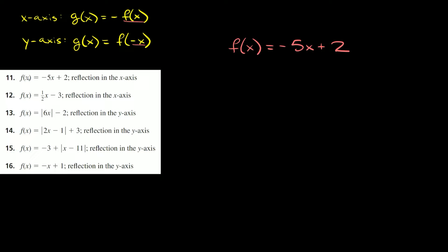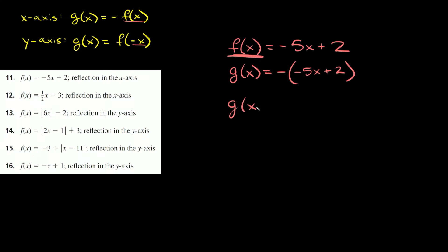Number 11: f of x is equal to negative 5x plus two, and we have to reflect it in the x-axis. For the x-axis, you just multiply your whole function by a negative symbol. So g of x equals negative times negative 5x plus two. Distributing that in, g of x is equal to positive 5x minus two.